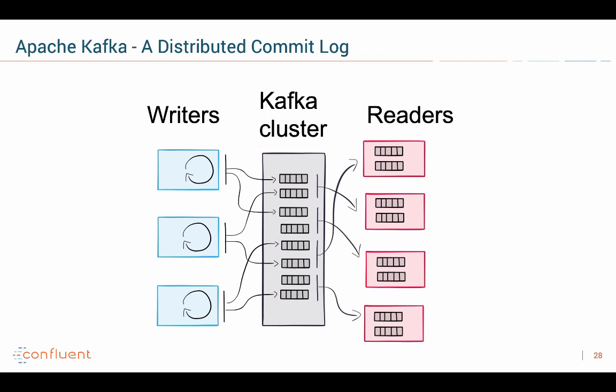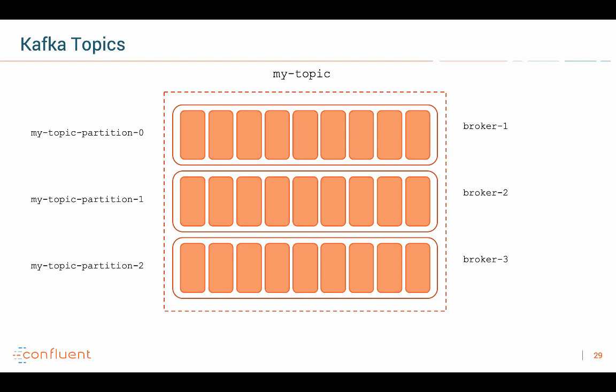Kafka under the hood is a distributed commit log — a distributed system that is reliable and built for failure. Even if nodes, network, or other things are down, the system is still not down. It's built for 24/7 deployments, which is really huge and important for IoT scenarios like manufacturing. You can also easily scale it up and down — add new producers, new consumers, scale up the cluster, all without downtime. Even for upgrades, you use rolling upgrades and dynamic configuration so your system is never down.